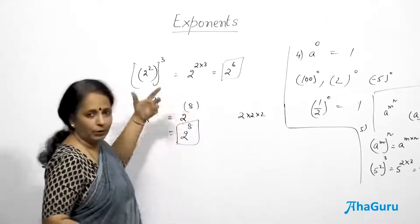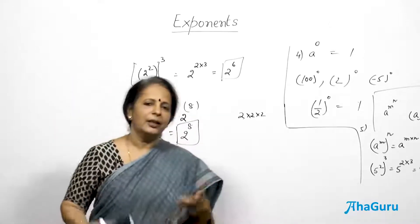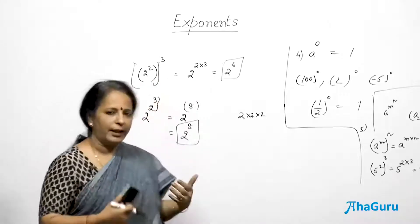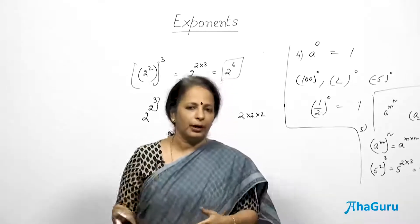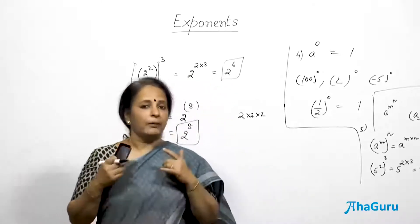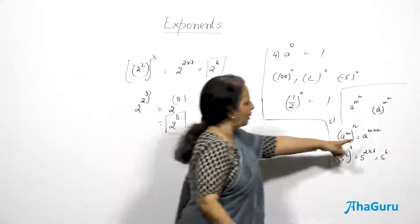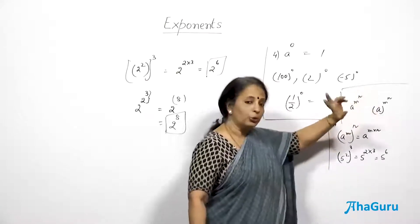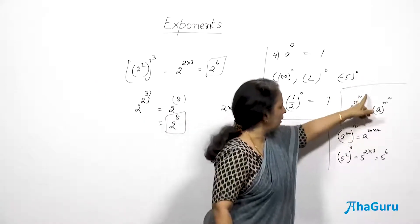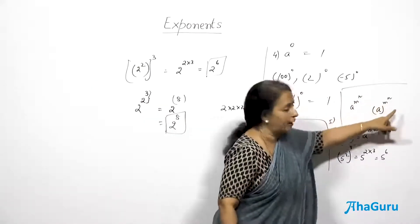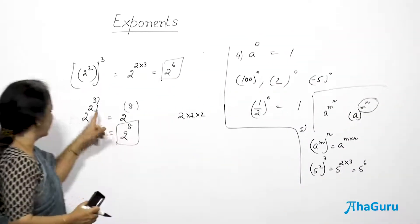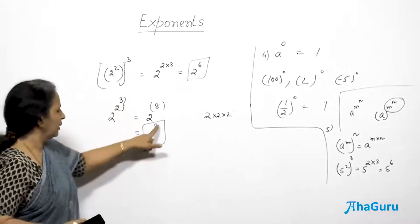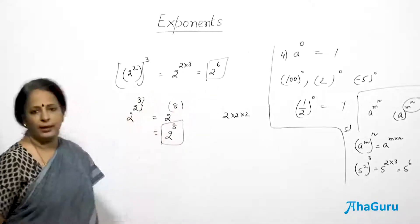Please understand the oral distinction: when we say 'a to the power m, whole to the power n,' it becomes a^(m×n) — that is the fifth law. But 'a to the power m to the power n' — with no 'whole' — means a^(m^n), and you first find the value of m^n, then use that as the exponent. The word 'whole' makes all the difference in reading and in the answer.